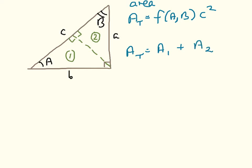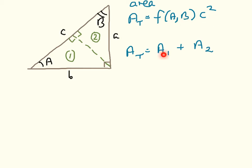To make the comparison, I'm going to work out the area of triangle 1 and the area of triangle 2 in exactly the same way as before — using the function of angles times hypotenuse squared — then add the two together, and we will find that Pythagoras' theorem drops out.